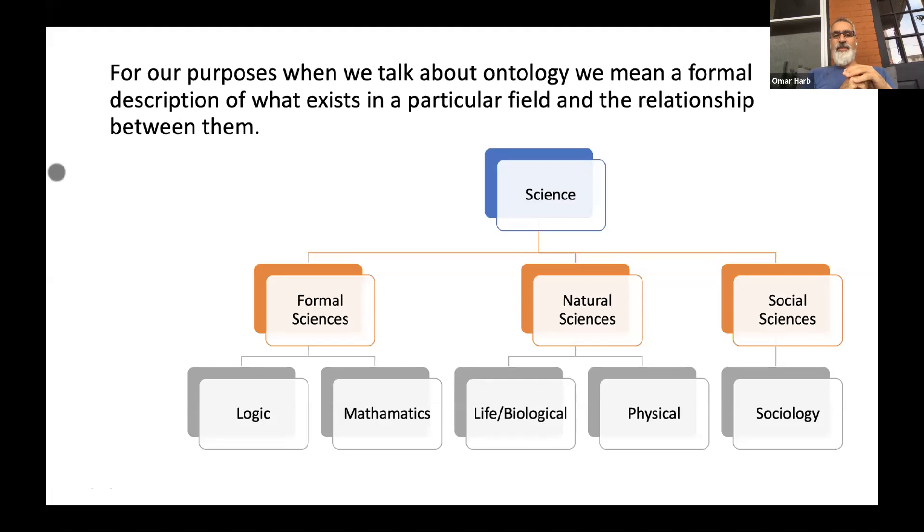And ontology, in our sense, at least for our purposes, is really a formal description of a particular field and the relationship between the different aspects of that field. For example, you can look at science, the field of science, and you can break it up into formal sciences, natural sciences, and social sciences.